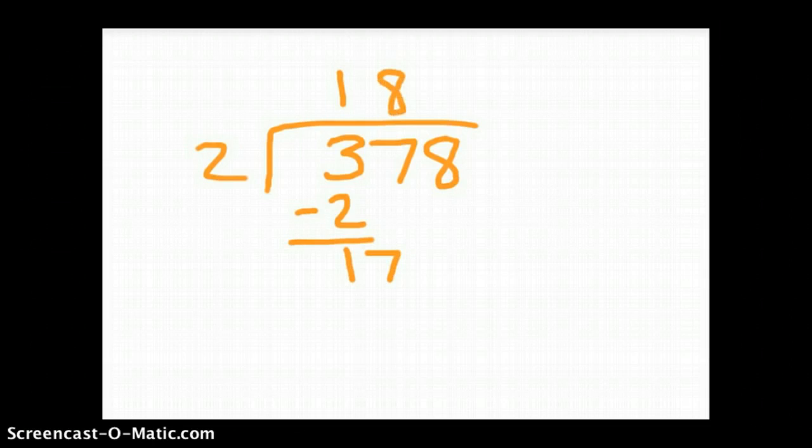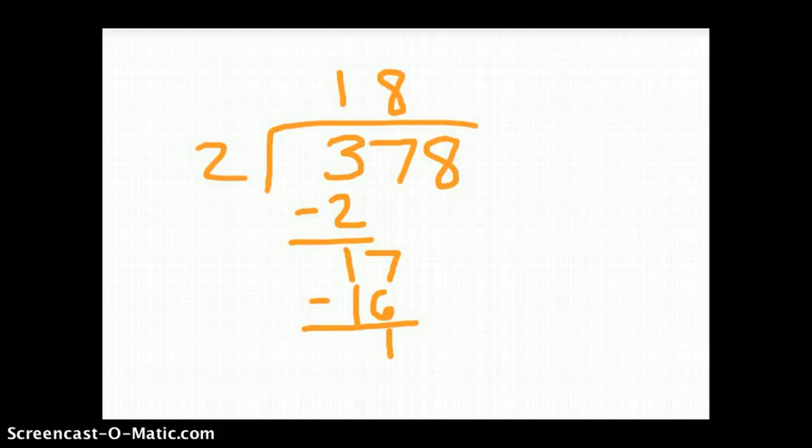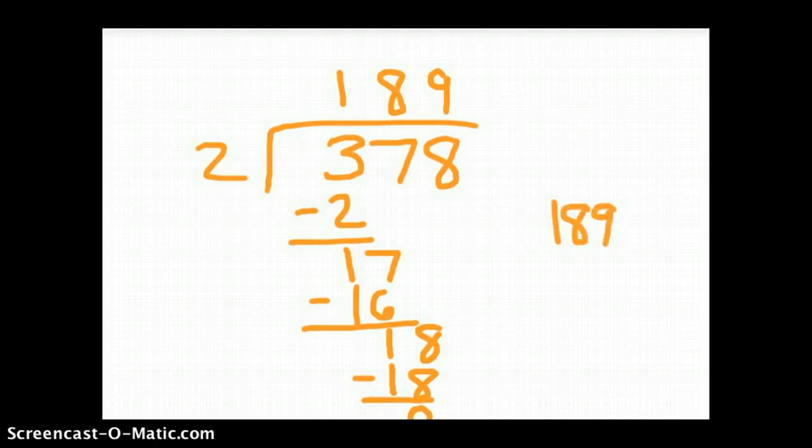And we bring down the 7. 17 divided by 2 is 8 because 8 times 2 is 16. 17 minus 16 is 1. And there's still another digit to bring down, the 8. 18 divided by 2 is 9 because 9 times 2 is 18. And 18 minus 18 is 0. So there is no remainder. 189 is our quotient or our answer.